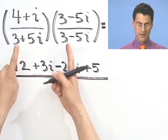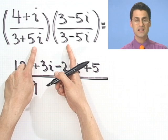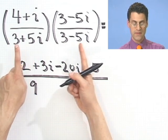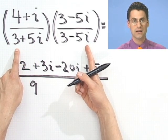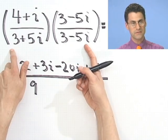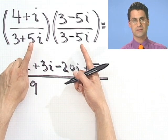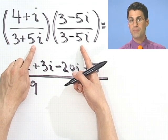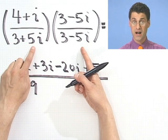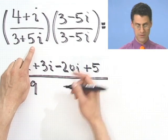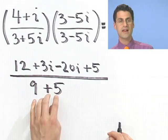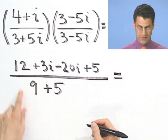So that takes care of the top. What about the bottom? The bottom I see 3 times 3, which is 9. Inside term is 15i. The outside term, notice, is minus 15i. So 15i minus 15i, they cancel. That was the whole point of this, by the way. And the last times the last is a minus 5i squared. But remember, i squared is negative 1. So I see a minus 5 times minus 1, which is a plus 5. Notice the denominator now is a real number. That was the whole point of this exercise, to have no i's in here. So I multiply top and bottom by the conjugate. Let's now reduce this a little bit. Simplify it, put it together.